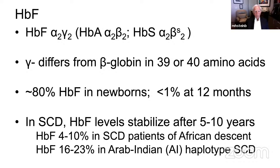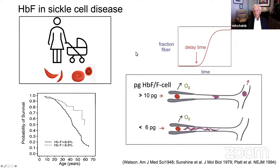In sickle cell anemia patients of African descent, the average adult fetal hemoglobin level is somewhere between 4 and 10%. In individuals of Arab or Indian descent with the Arab-Indian haplotype, fetal hemoglobin levels stabilize at about 10 years of age and are somewhere between 16 and 23% of total hemoglobin.